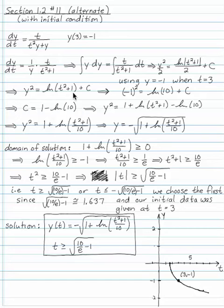And doubling both sides, we can look for the constant C by setting y equal to minus 1 and t equal to 3. So we find that C is equal to 1 minus the log of 10. So y squared is 1 plus log of t squared plus 1 minus log of 10.